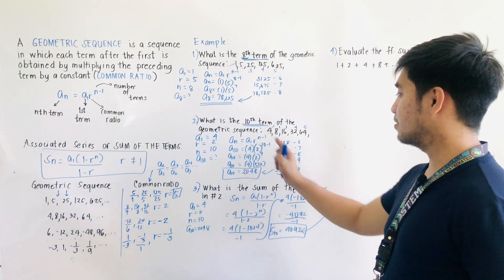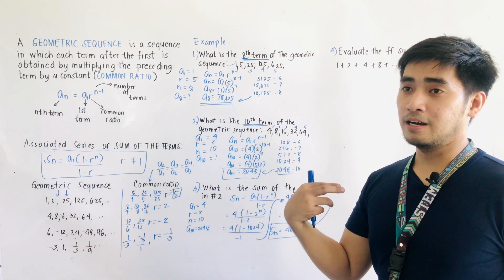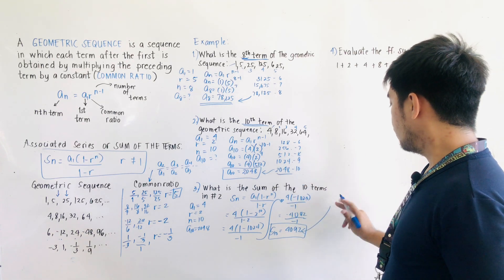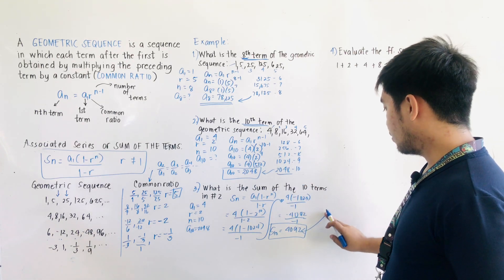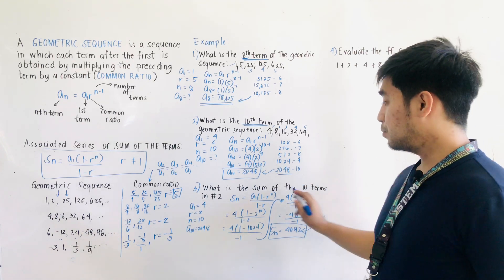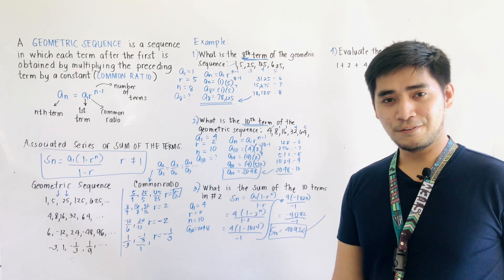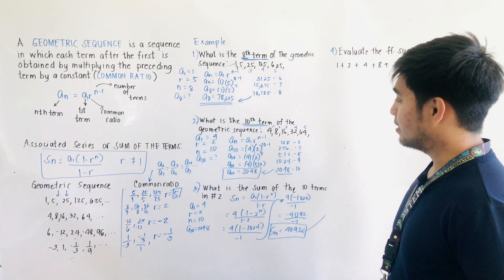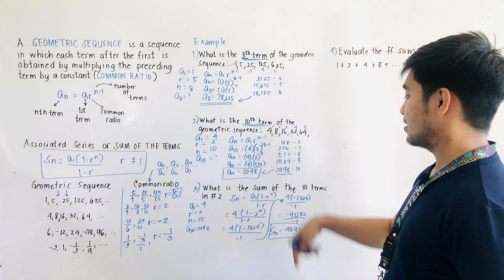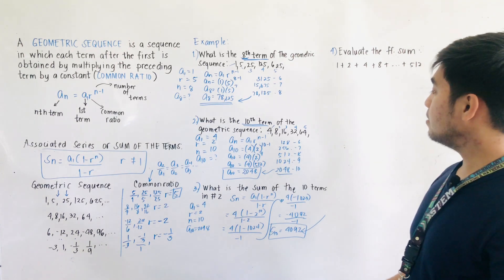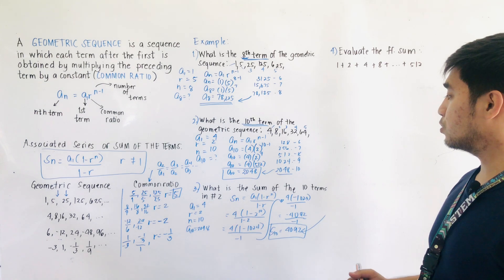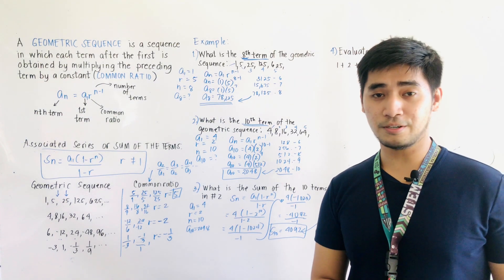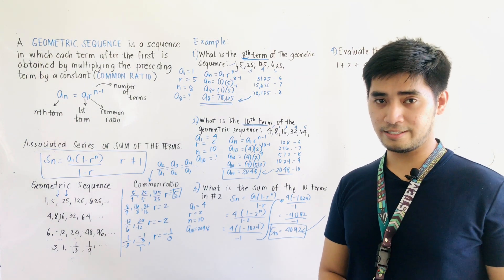This is the sum of the 10 terms in the geometric sequence. If we add 4 plus 8 plus 16 plus 32 plus 64 plus 128 plus 256 plus 512 plus 1,024 plus 2,048, the total is 4,092 — the same result. Using the formula is the shorter, more efficient method.